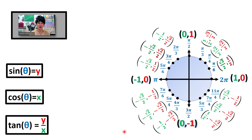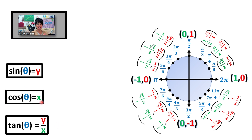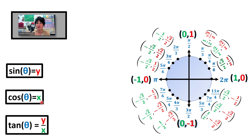Let's quickly review. Sine of theta equals y — it's how high you are, how far from the x-axis. Cosine of theta equals x — the distance away from the y-axis. Thinking alphabetically: the x-coordinate is the answer to cosine, and the y-coordinate is the answer to sine — x, y corresponds to cosine, sine. Tangent is slope, rise over run, so tangent is y divided by x.